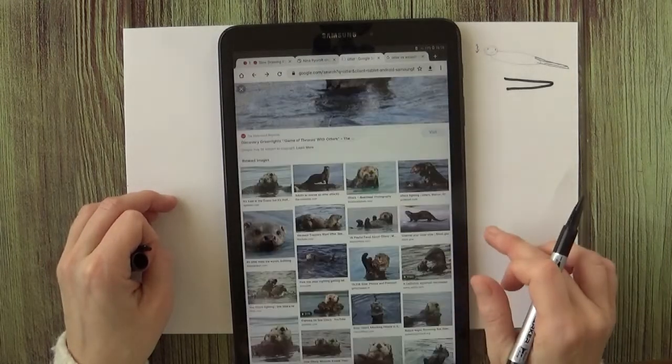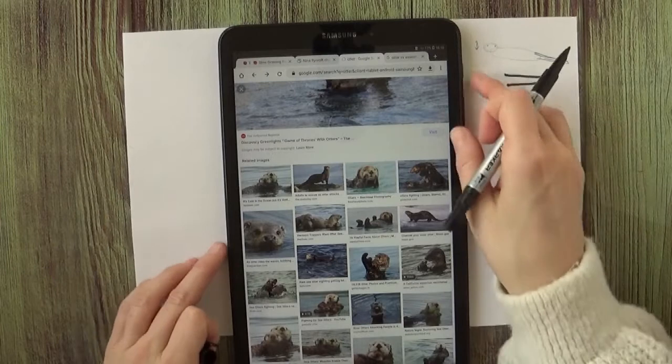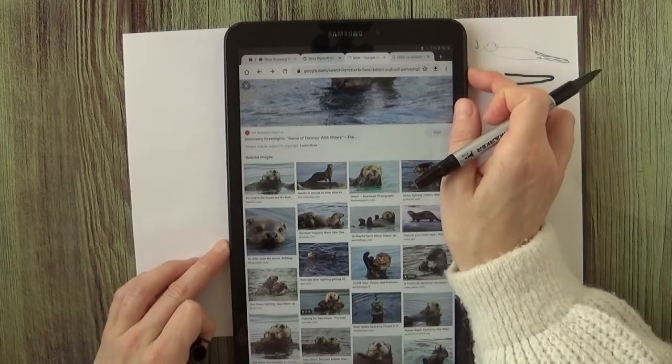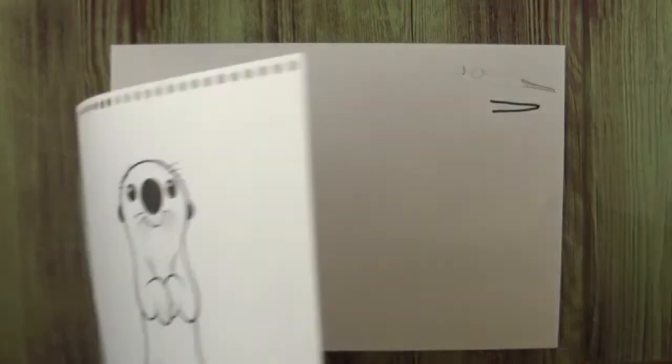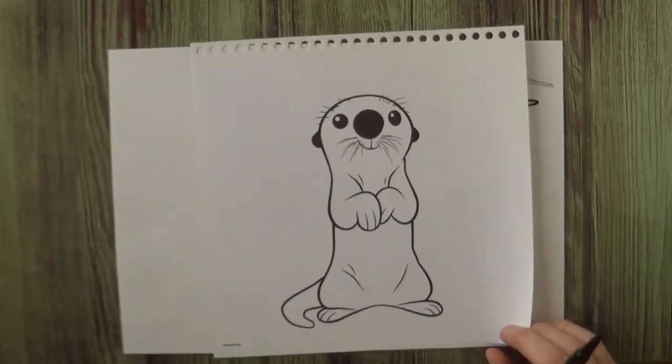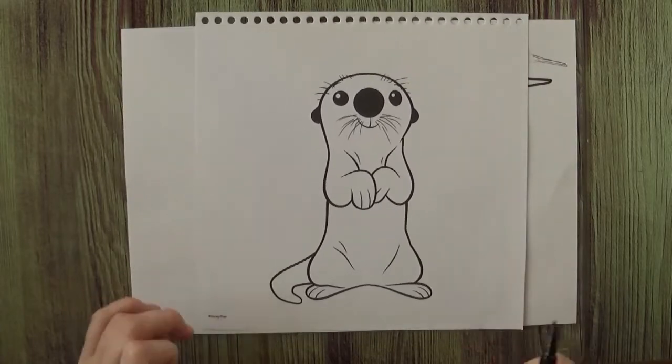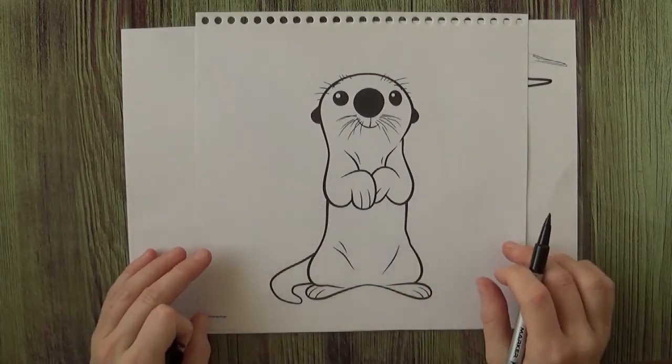So this can really help you when you try to learn how to draw an animal. Then another thing that you can do is look at the references of drawings, how other people simplified otters.